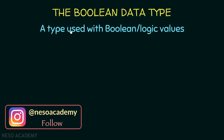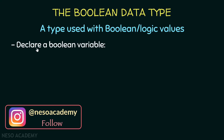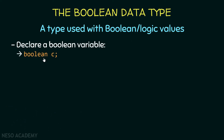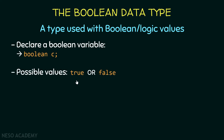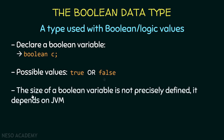First of all, what is the boolean data type? It is a type that is used with boolean or logic values. A boolean is a value that represents true or false. We're going to use the boolean keyword — here I'm calling it 'c' — and the possible values for a boolean variable are true and false.